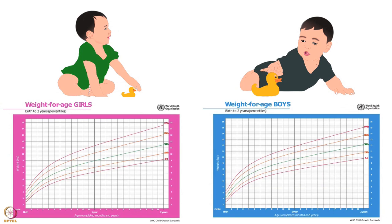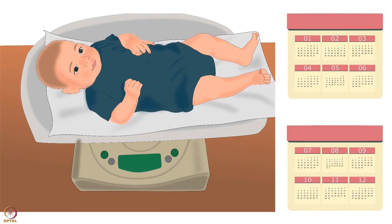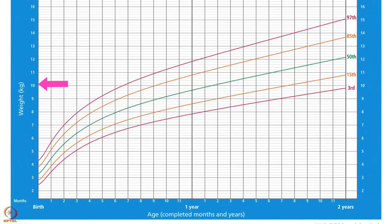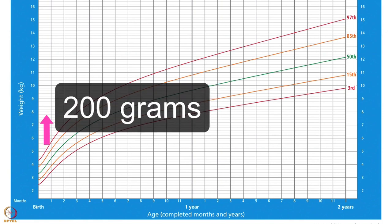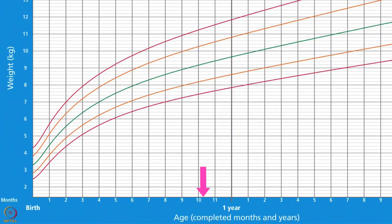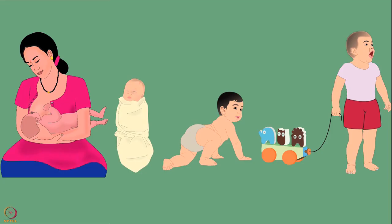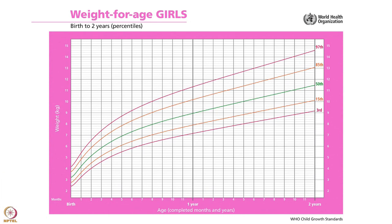Now let's learn more about the second type of percentile growth chart — the Weight for Age Growth Chart. Weight for Age reflects body weight according to the child's age. On Weight for Age Charts, the Y-axis shows weight in kilograms, where horizontal lines represent an increase of 0.2 kgs or 200 grams. The X-axis shows age, starting at 0 (birth), plotted in completed months and years from 0 to 2 years of age.